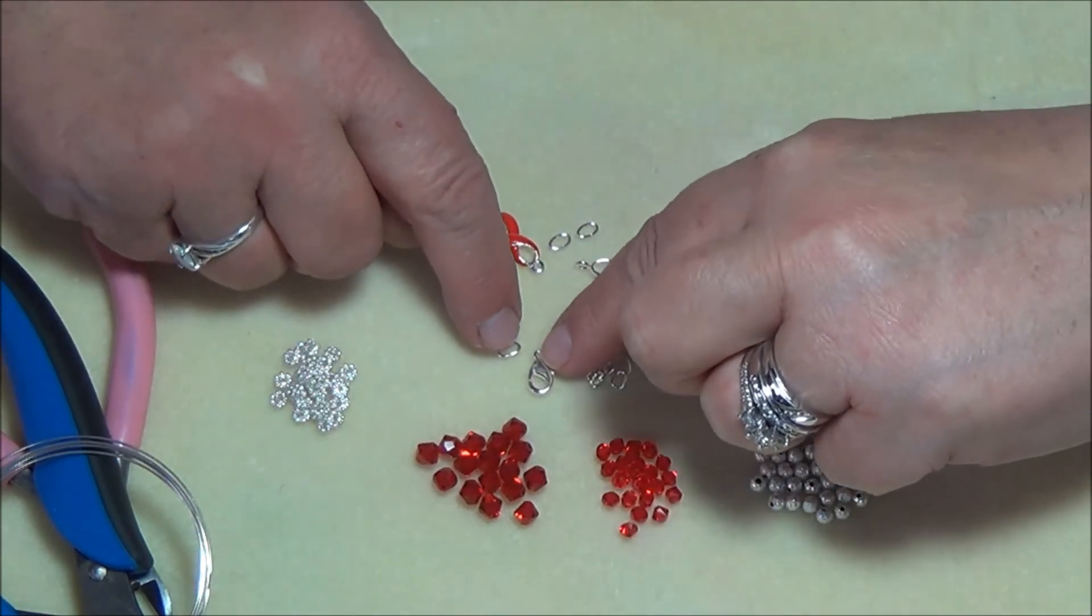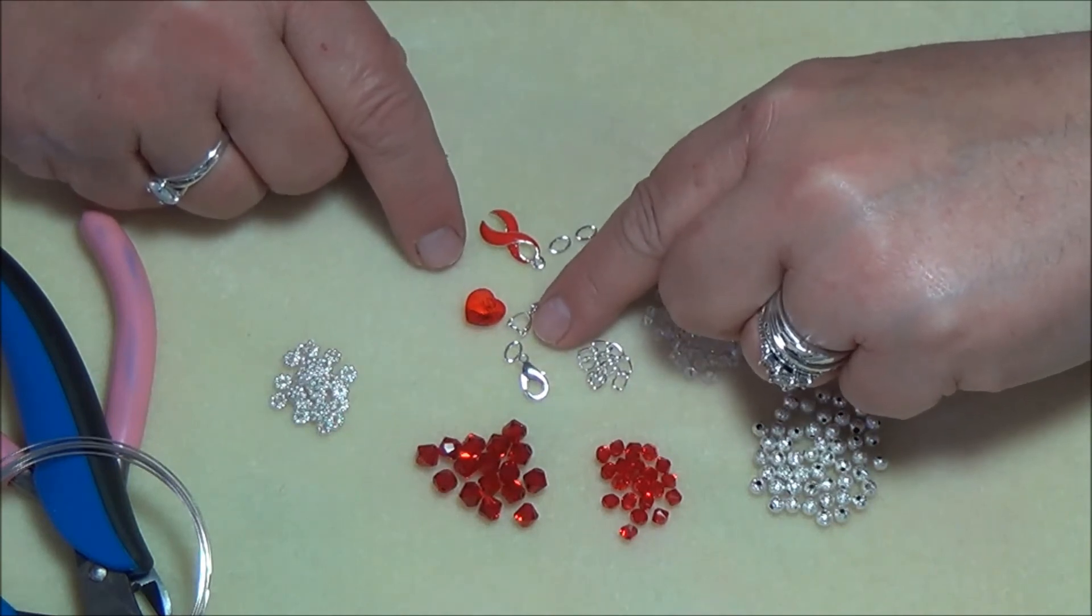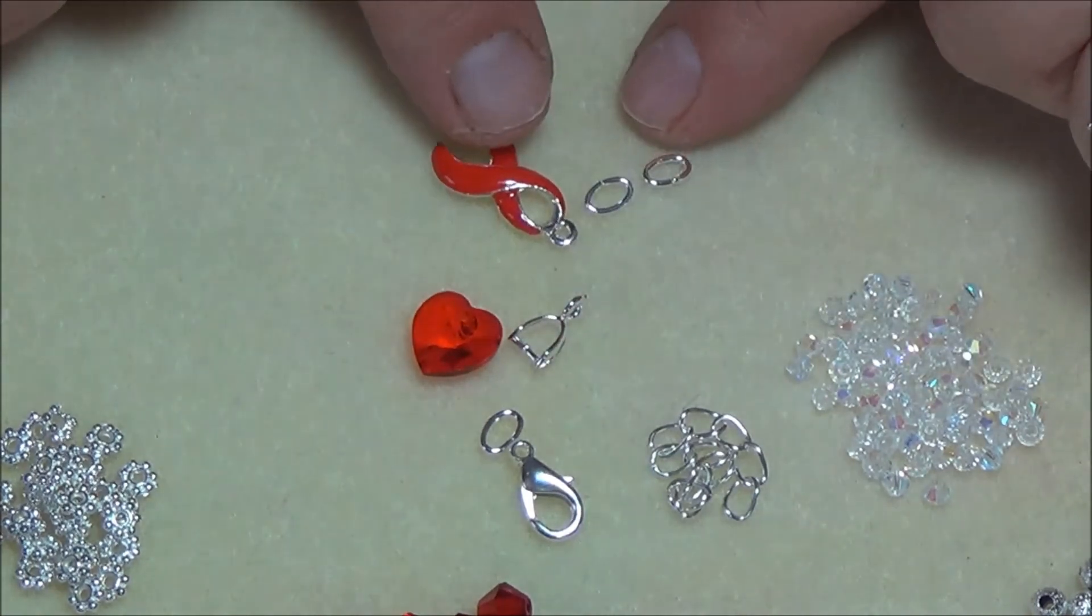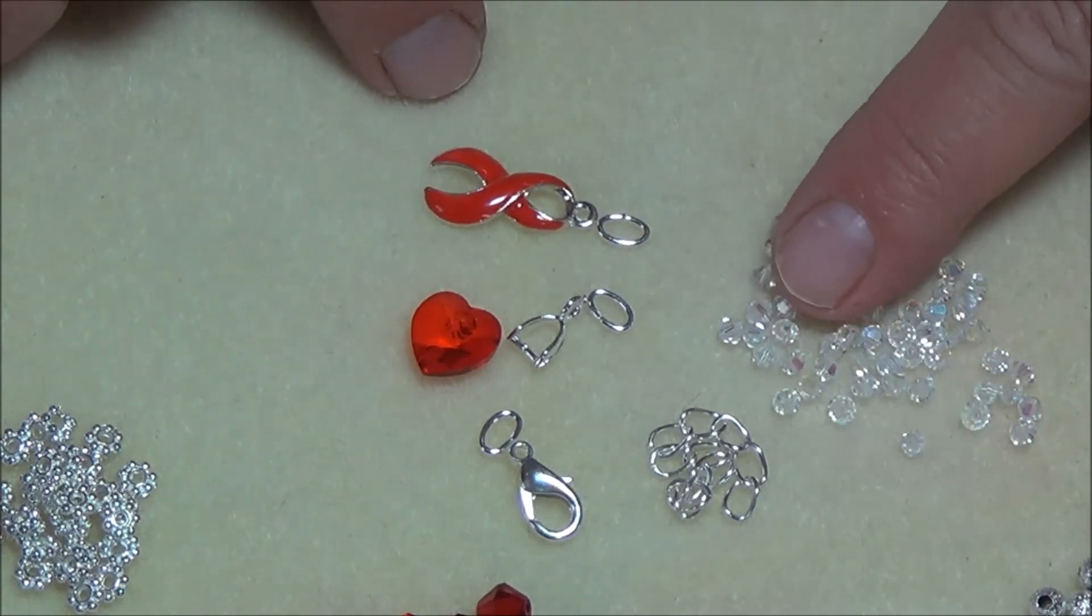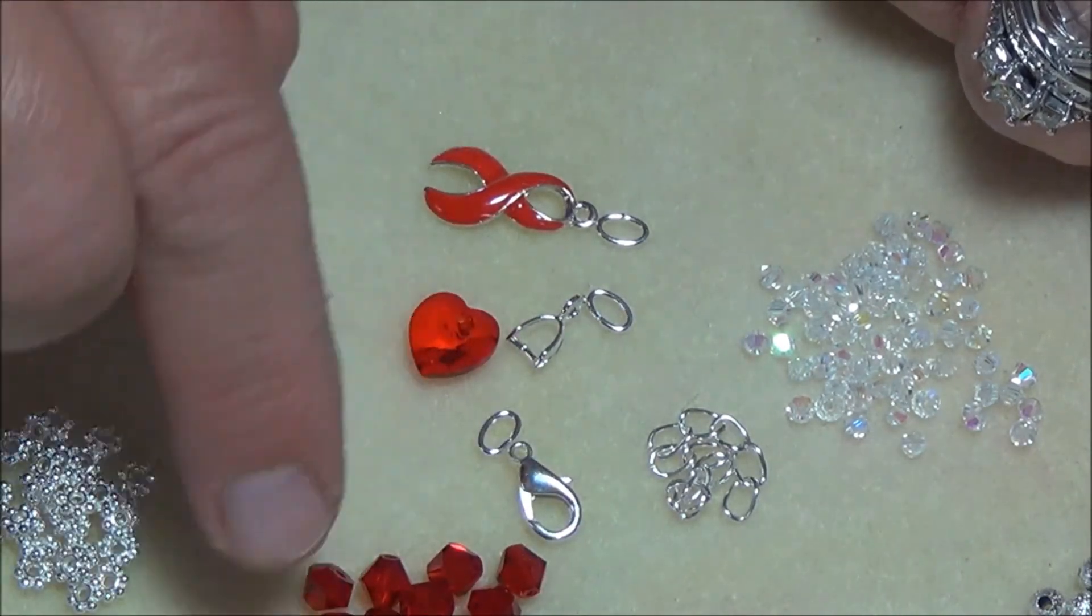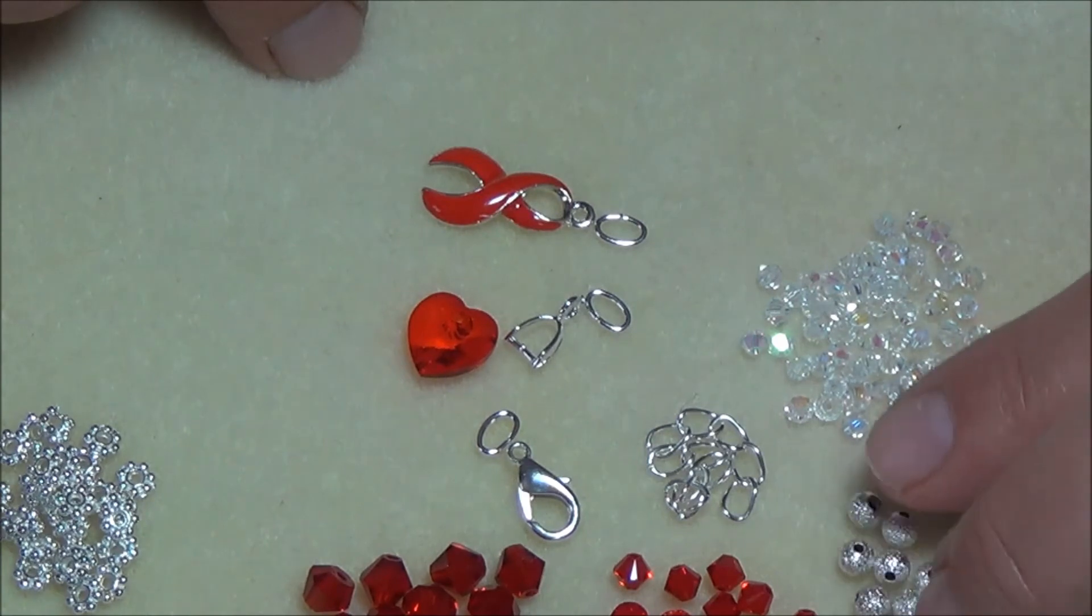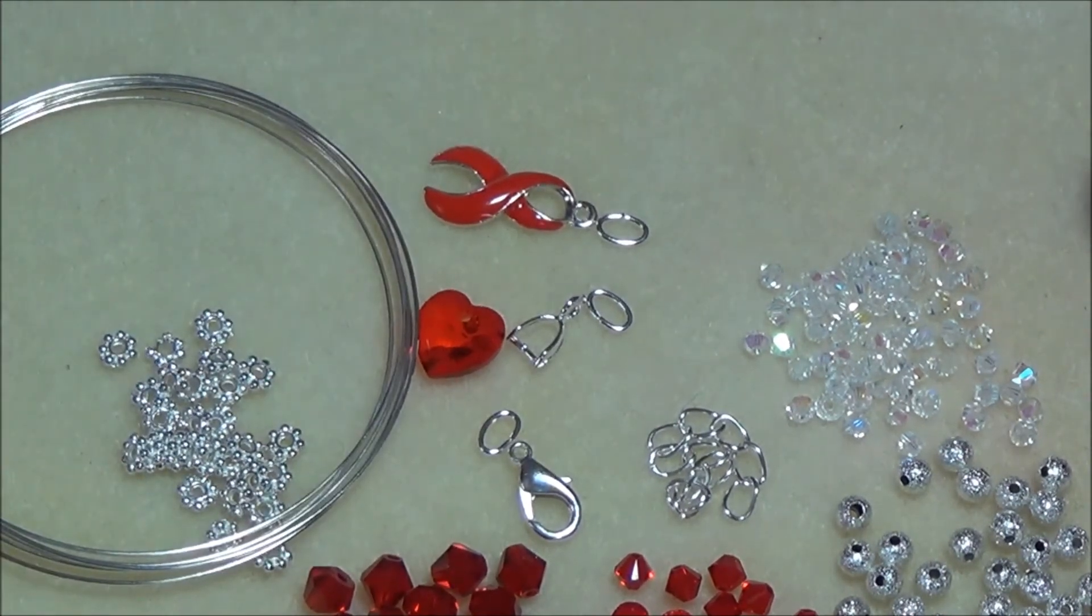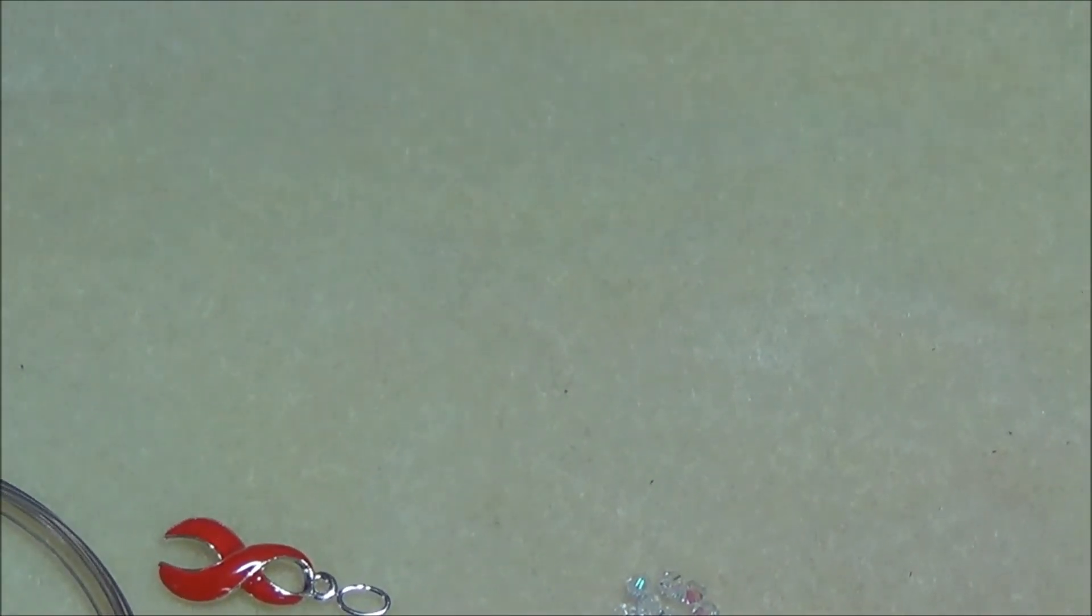For my crystal Swarovski heart, I need a bale so I'm going to use this bale here. I'm going to use this bale for this crystal heart and I'm going to attach it with an oval jump ring and I'm going to use an oval jump ring for the ribbon. I am also going to use three millimeter crystal AB crystals. I'm going to use six millimeter Siam red crystals and four millimeter Siam red crystals and I'm going to use these Stardust four millimeter silver plated beads and of course I'm going to use daisy spacers.